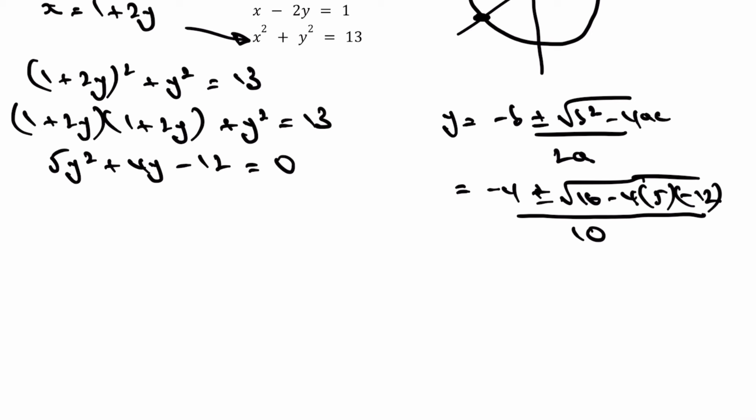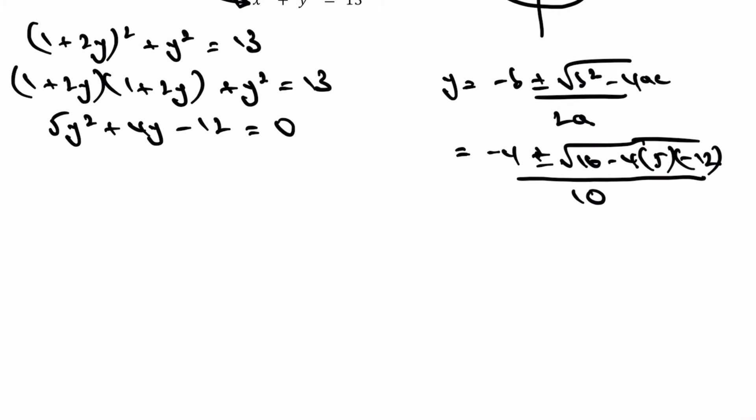So therefore, we've got two values of y. My first value of y is going to be equal to minus 4 plus 16, all divided by 10. My second value of y is going to equal minus 4 minus 16, all divided by 10. And just when I work those out, I get a value of y equals 1.2, and I get a value of y equals negative 2.